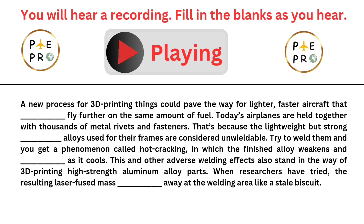Try to weld them and you get a phenomenon called hot cracking, in which the finished alloy weakens and fractures as it cools. This and other adverse welding effects also stand in the way of 3D printing high-strength aluminum alloy parts. When researchers have tried, the resulting laser-fused mass flakes away at the welding area like a stale biscuit.